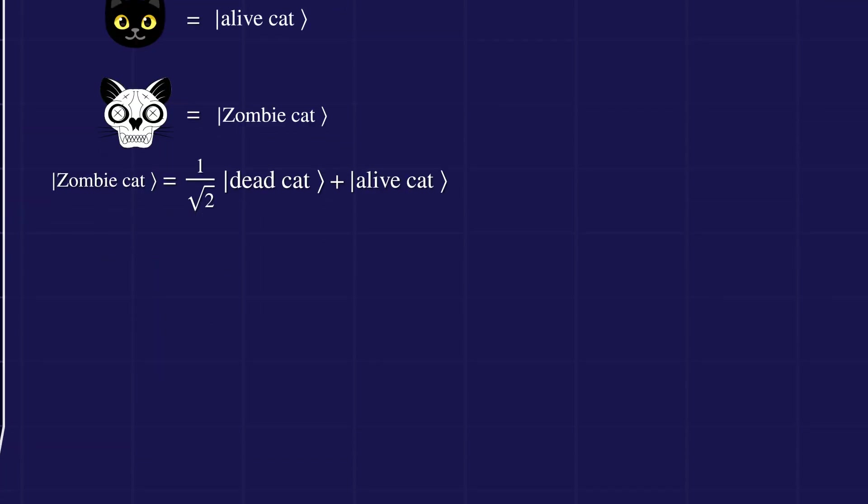Next, we have the blank state, which has no information about the input state. Now, let's see what happens if we feed the Schrodinger's box into the machine together with the blank state.